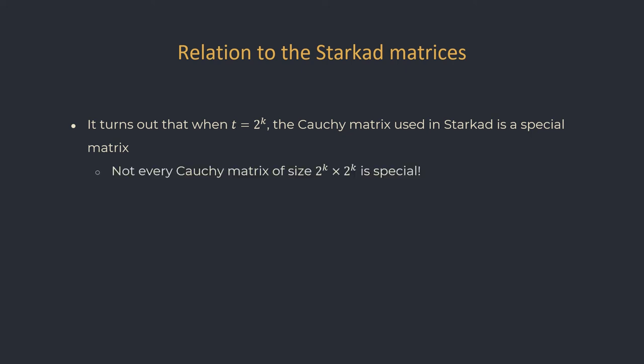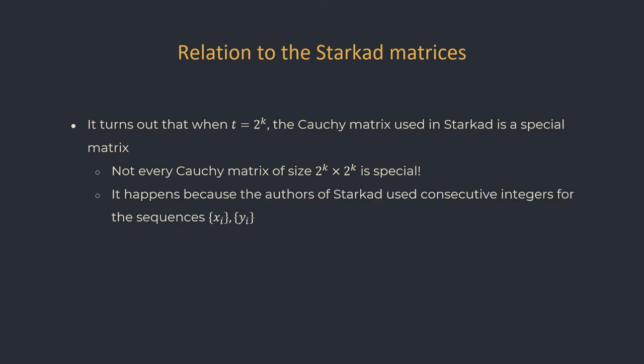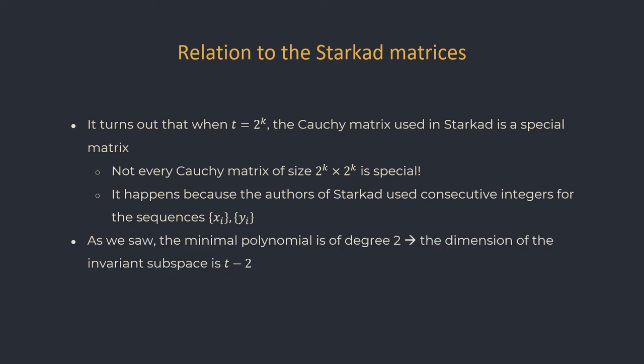There are far more Cauchy matrices than there are special matrices. While not every Cauchy matrix is a special matrix, every special matrix is a Cauchy matrix — so special matrices are a subclass of Cauchy matrices. The reason why the Cauchy matrices used by Starkad are special matrices is the specific choice of sequences x_i and y_i as consecutive integers starting from 0, giving the matrix this special structure. Since M squared is a scalar matrix, the minimal polynomial is of degree at most 2, giving a lower bound of T minus 2 on the dimension of the invariant subspace, which proves the first theorem.